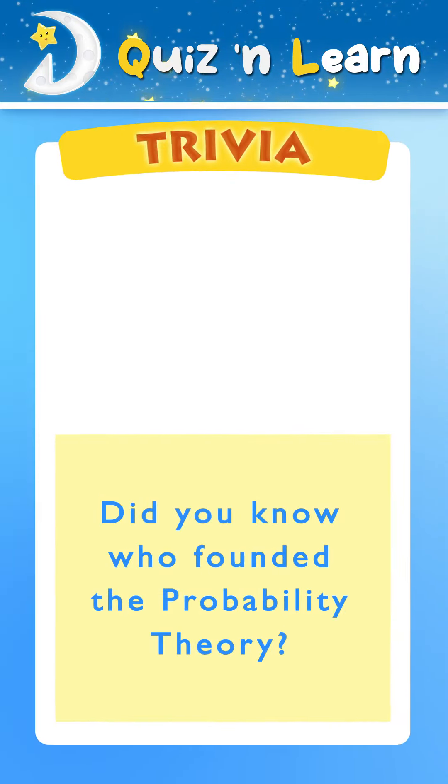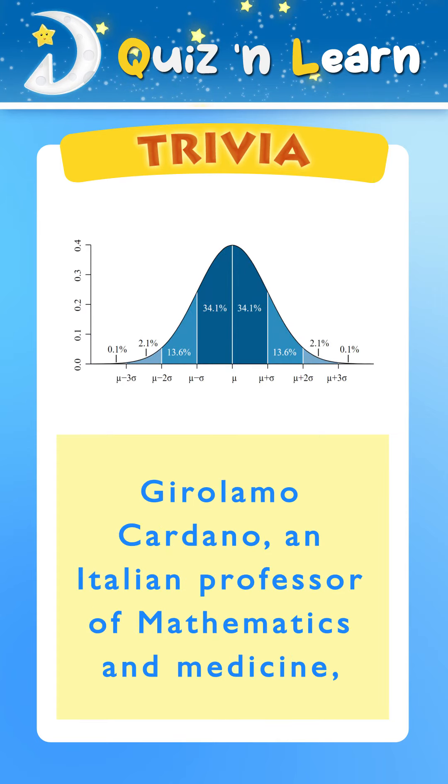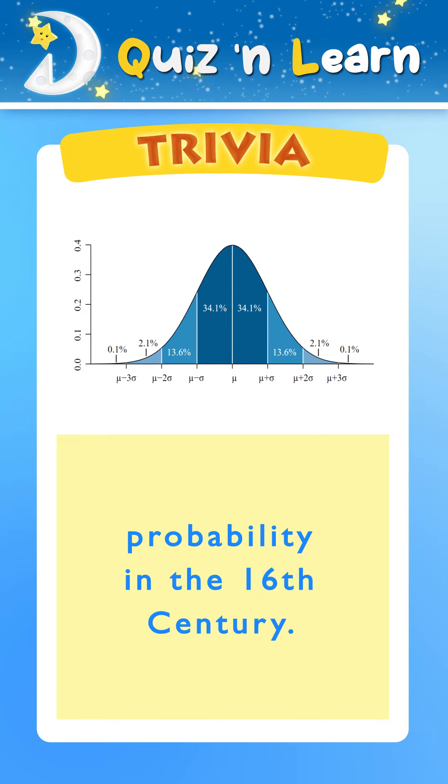Trivia Time! Did you know who founded the probability theory? Girolamo Cardano, an Italian professor of mathematics and medicine, is actually the first person to invent probability in the 16th century.